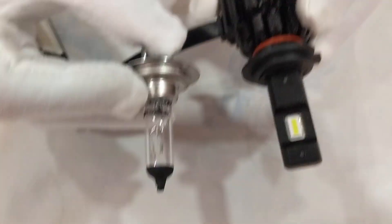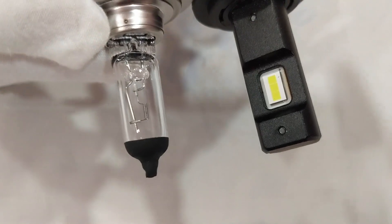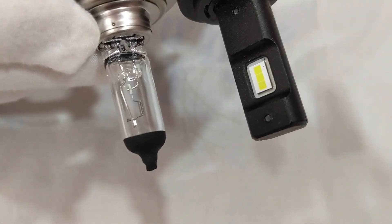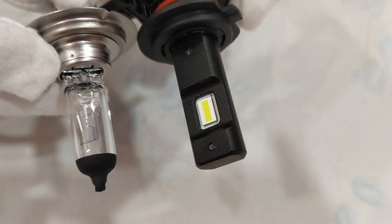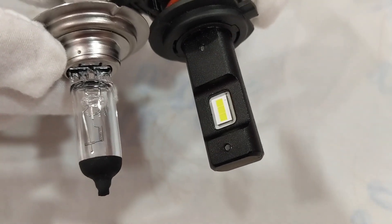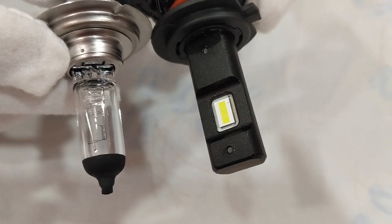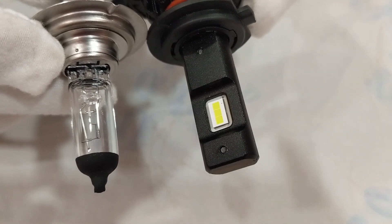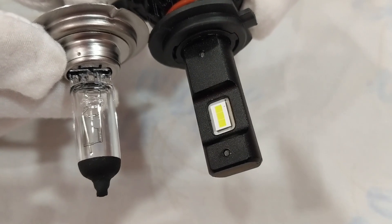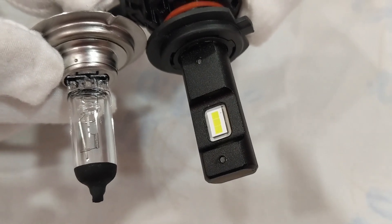As you can see the filament of this halogen bulb, while getting this LED light for my car, what I did is I compared it with the halogen bulb. As you can see in this video, the filament of my H7 bulb is at the same length - I would rather say the chip of my LED light is at the same position or at the same height when compared to the halogen bulb.